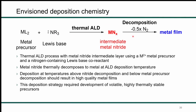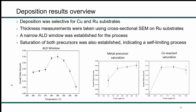Our envisioned chemistry was to develop a metal(II) precursor and react it with a nitrogen-containing Lewis base by thermal ALD to deposit a metal nitride intermediate film. This film would then decompose during the ALD process, losing nitrogen to give a metal film. Even though there is a decomposition aspect to this, it's still a thermal ALD process because we deposit the initial nitride film by thermal ALD. Based on literature, we had a general idea of what temperature range these metal nitrides decompose at, so we had to balance our precursor thermal stability with the decomposition temperature of the nitride film. This required development of a volatile, highly thermally stable metal precursor.